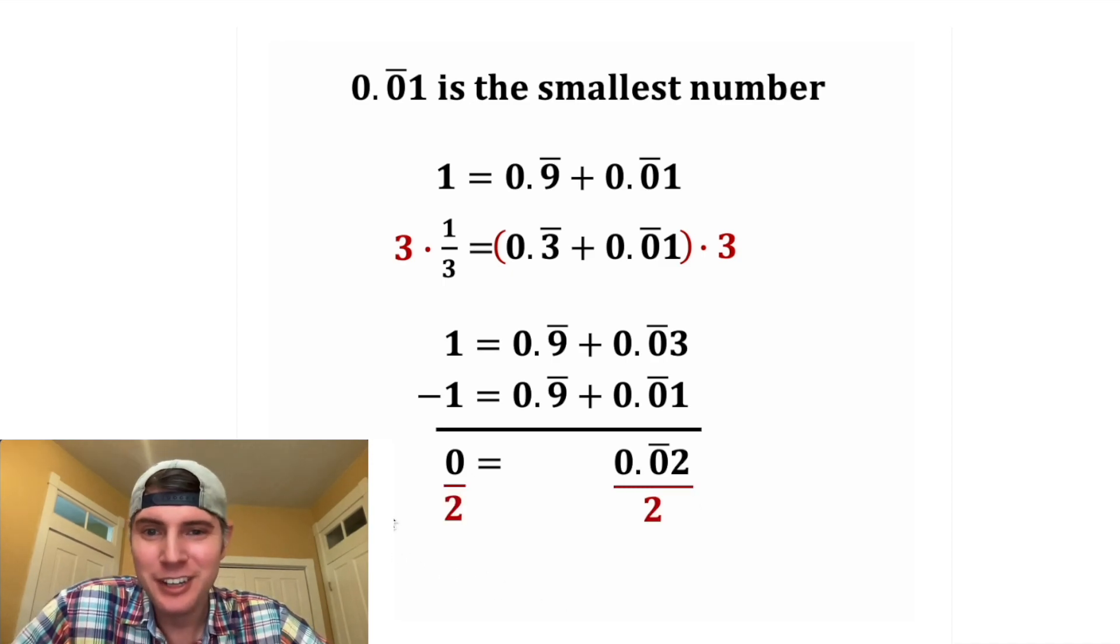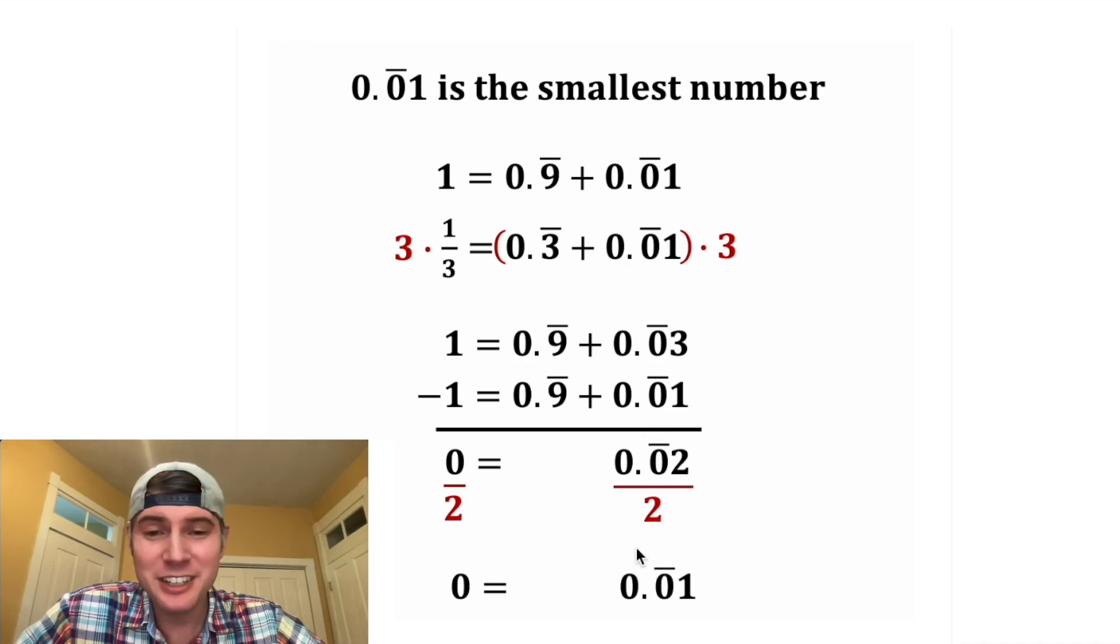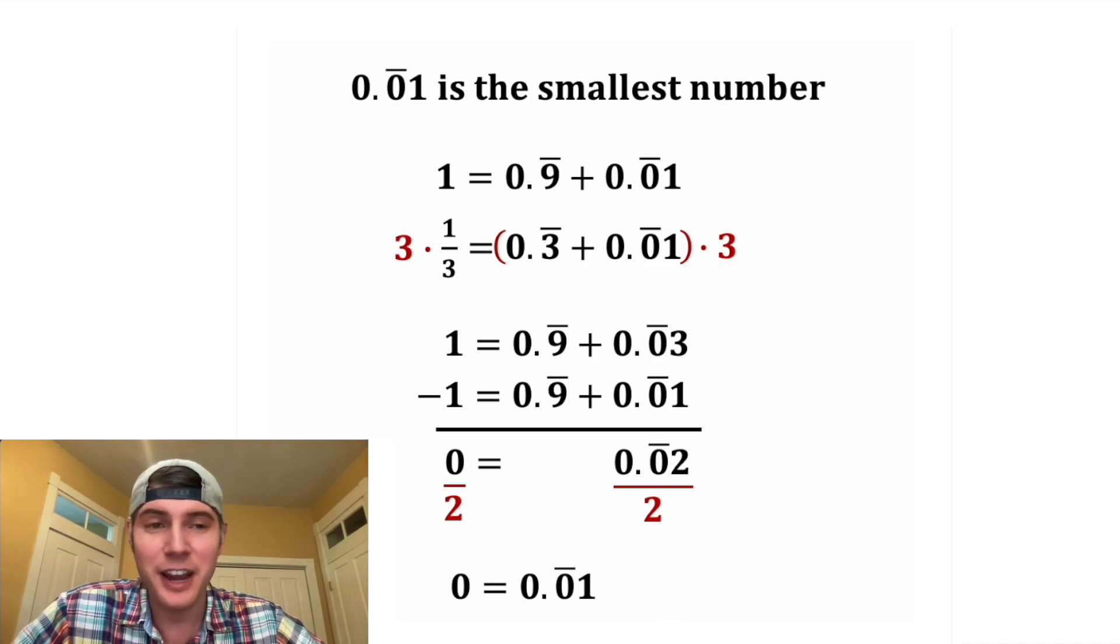And then let's divide both sides by two, and we get zero divided by two is zero, and 0.0 recurring two divided by two is 0.0 recurring one. And now we get the conclusion that this smallest possible number is in fact zero. How exciting.